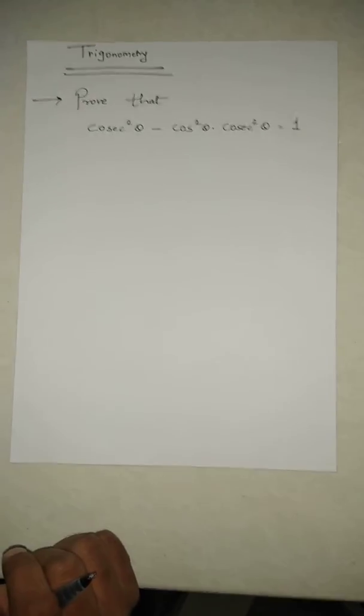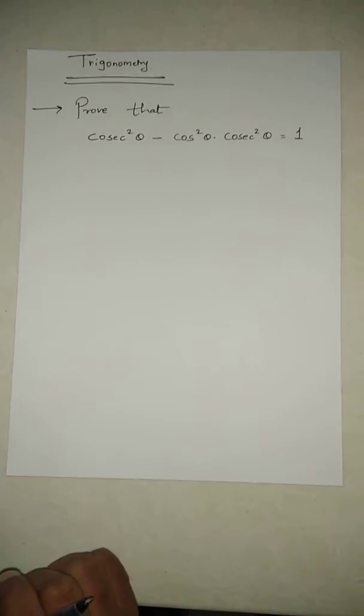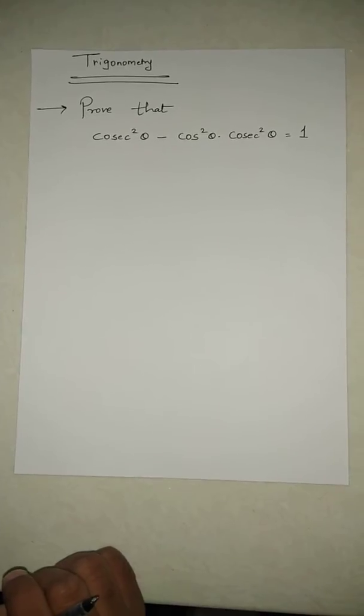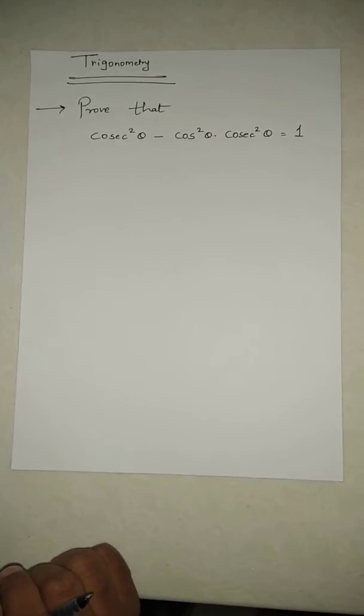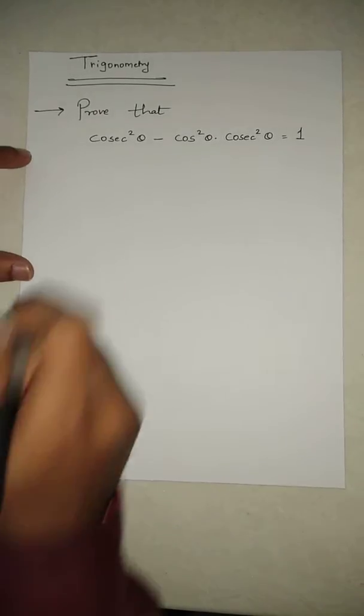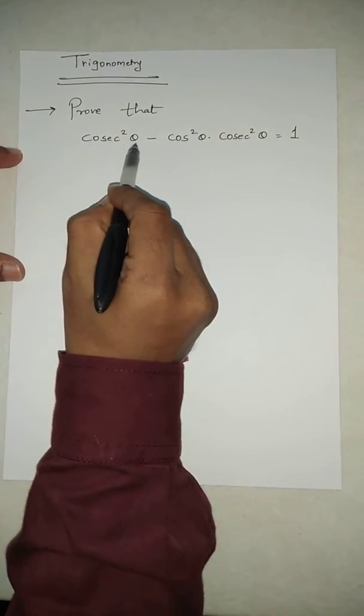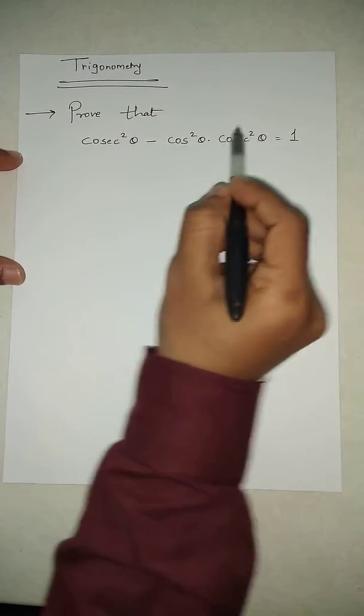Hello friends, today's topic is trigonometry again. We'll try to solve a simple example based on trigonometry. The question is: prove that cosec²θ - cos²θ · cosec²θ = 1.